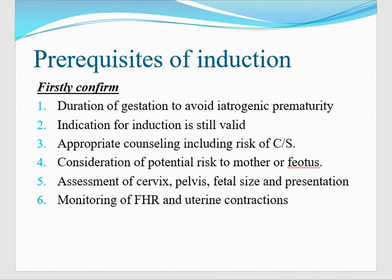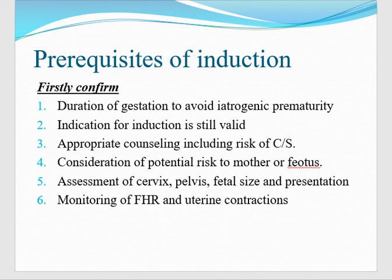The indication for induction of labor should still be valid, because induction of labor is not without risk factors. Third, appropriate counseling including the risk of cesarean section — because induction of labor many times ends up with cesarean section, so we have to explain to the patient. Number four, consideration of the potential risks to the mother and the fetus. Then, assessment of the cervix. We will see the pelvis, fetal size, and presentation. Presentation should be cephalic, fetal size should be average — 2.5 to 3.5 kg — pelvis should be adequate with no CPD. And monitoring of fetal heart and uterine contractions before induction. If there is fetal distress, we will not do induction.